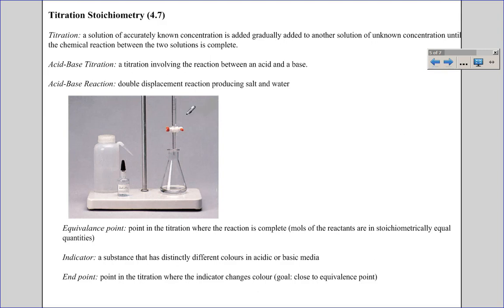When you do a titration in the lab, you're going to use a piece of glassware called a burette. It's like a really tall graduated cylinder. You can see the bottom part of one here, and it has what's called a stopcock, which is used to control the addition of solution from the burette into the flask below. This way we can have our unknown solution down here and add a very controlled amount of the known solution into the flask until they're perfectly reacted.